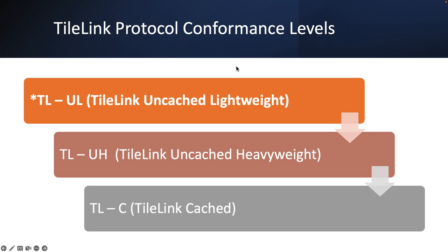TileLink protocol has three different conformance levels to handle lightweight all the way up to full-fledged cached systems. The lowest is TileLink Uncached Lightweight, the second is TileLink Uncached heavyweight but still uncached, and the third—the highest conformance level—is TileLink-C for cached systems which supports caching.